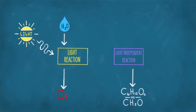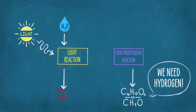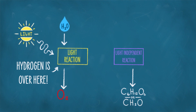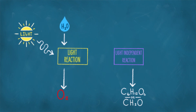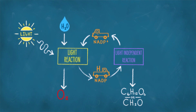Water comes into the light reaction, the energy from light removes the hydrogens, and the oxygen is thrown away. We have hydrogen, because the molecule we're trying to build — CH2O — has hydrogen in it. But the hydrogens are in the light reaction, and we need to get them over to the light-independent reaction to build sugar. For this we need a truck, and that truck is called NADP+. NADP+ comes to the light reaction where it is loaded up with hydrogen to form NADPH — the H stands for hydrogen. NADPH goes over to the light-independent reaction and drops off the hydrogen. The unloaded truck becomes NADP+ again and heads back to the light reaction to do it all again. Now we have the hydrogen needed to build CH2O.